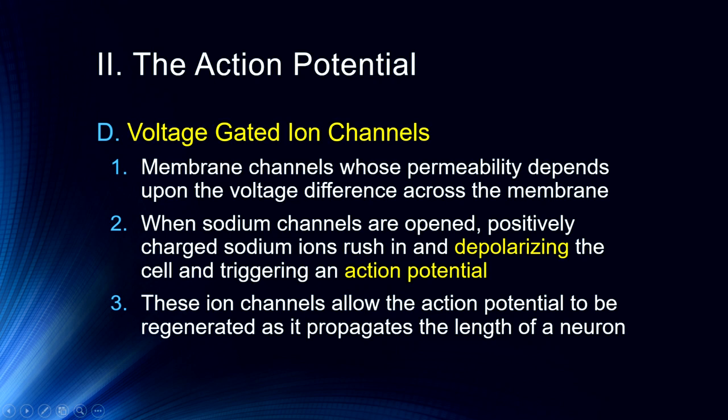These ion channels allow the action potential to be regenerated as it propagates the length of a neuron — the signal is regenerated at each point along the way. As each ion channel opens, it generates a signal that opens the next ion channel, and so on, propagating down the length of the neuron. It's not like electricity traveling through a wire with electrons moving along; instead, it is the sequential opening and closing of ion channels that generates this signal.